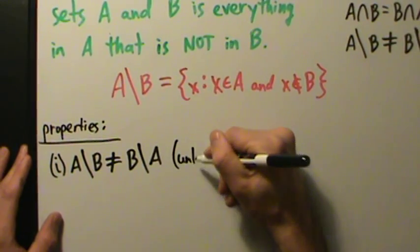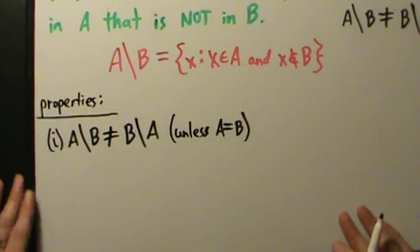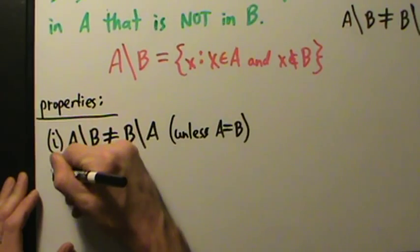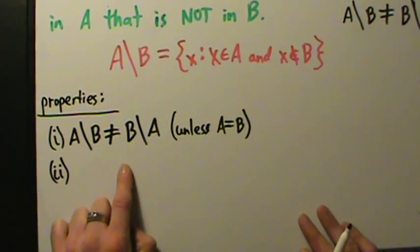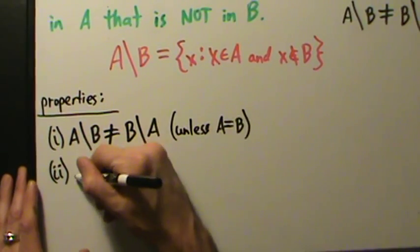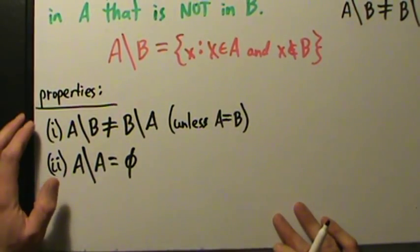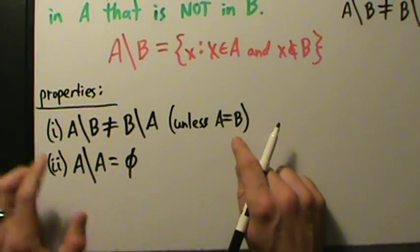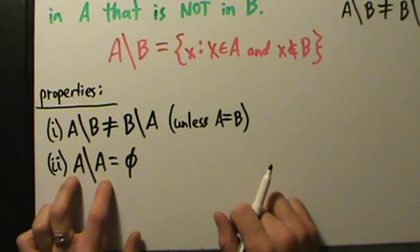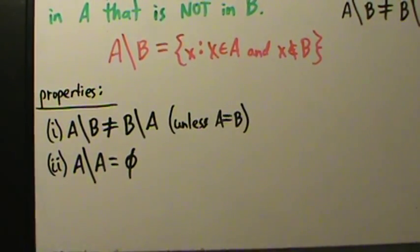That's property one: A without B is, in general, not the same thing as B without A, unless A equals B. Property two says if you take a set difference of a set with itself, you just get the empty set back. That's actually why property one is true unless A equals B — because if A and B are the same set, then you're doing a set difference of a set with itself, and you just get back the empty set.